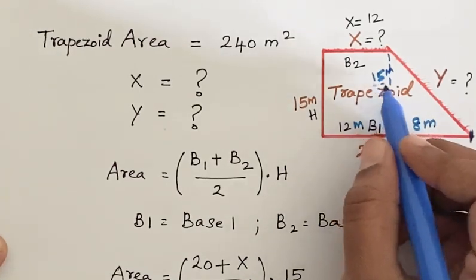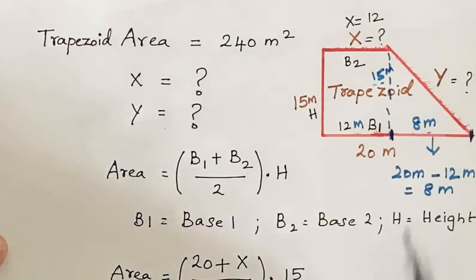So if we add 12 meters plus 8 meters, we get the overall length, that is 20 meters. Now let us find the value of y.